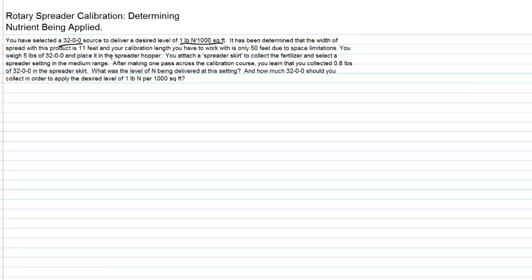We've determined with this product that the width of spread is 11 feet. Our calibration length is limited - we've got a 50 foot long test course to work with. We're going to weigh out five pounds of 32-0-0 to start with, so we've got a known weight to place in the spreader hopper.